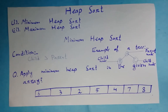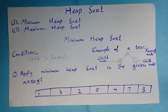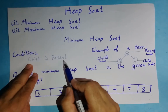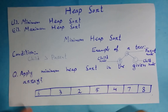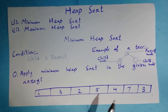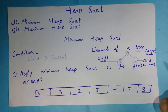First of all, you have to understand that in minimum heap sort there is one condition: the child node should be greater than the parent node. When you are going to apply minimum heap sort in the given array, you have to take care of one condition — the value of the child node should be greater than the value of the parent node every time.